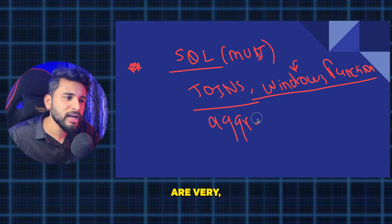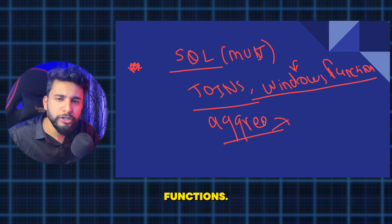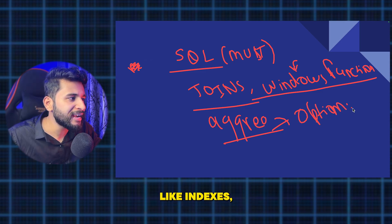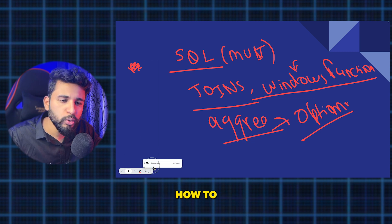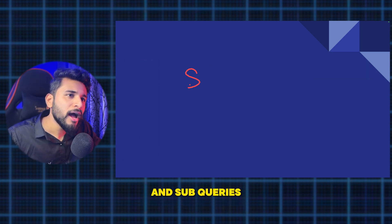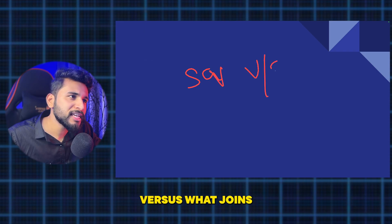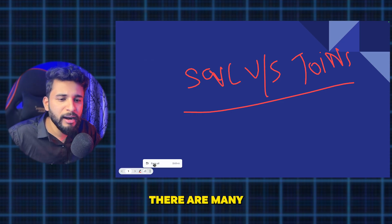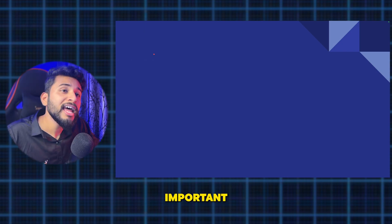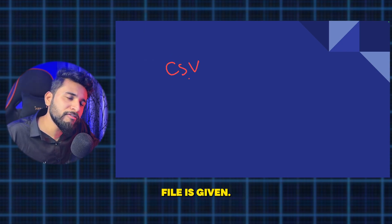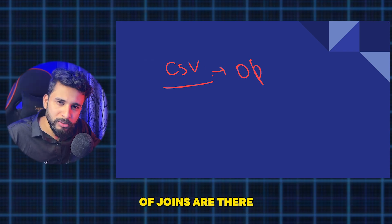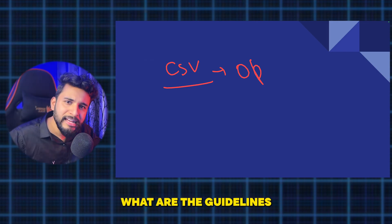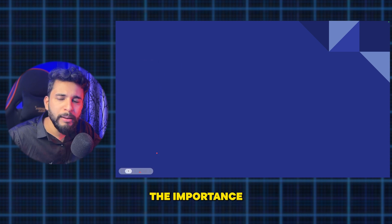Aggregations and aggregated functions are very important. There are many optimization techniques like indexes and CTEs. Sub-queries versus joins is a common interview question — the answer depends on the requirements. If a set of CSV files is given with many joins, how will you optimize? What guidelines will you give to the team? These are key SQL interview topics.